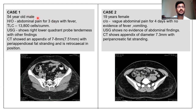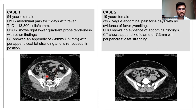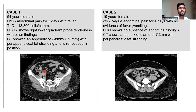The first case was a 54-year-old male with abdominal pain for 3 days with fever, and a leukocyte count of 13,800, which was increased. He showed right lower quadrant tenderness with other findings on USG. CT showed an appendix measuring 7 to 8 mm, with an average of 7.5 mm, with peri-appendiceal fat stranding in a retrocecal position, as seen in the image.